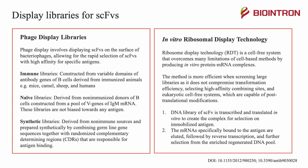The second display library type is in vitro ribosomal display technology (RDT), a cell-free system that overcomes many limitations of cell-based methods by producing in vitro protein-mRNA complexes. This method is more efficient when screening large libraries, as it does not compromise transformation efficiency. It selects high-affinity combining sites using eukaryotic cell-free systems capable of post-translational modifications. The process begins with a DNA library of SCFV, which is transcribed and translated in vitro; the mRNAs specifically bound to the antigen are then eluted, followed by reverse transcription and further selection from the enriched regenerated DNA pool.